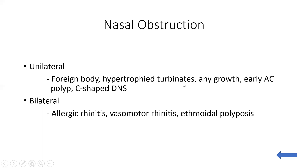Hypertrophic turbinates, or any growth or mass in the nose, also leads to nasal obstruction. Early stage antrochoanal polyp causes unilateral nasal obstruction. When the antrochoanal polyp grows in size, it grows posteriorly and involves the nasopharynx. Once it is in the nasopharynx, it will cause bilateral nasal obstruction, but in early stages it causes unilateral nasal obstruction.